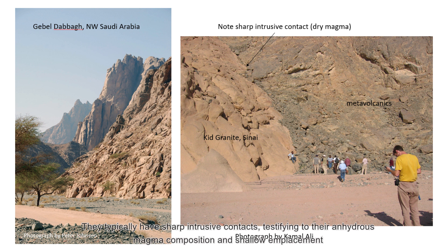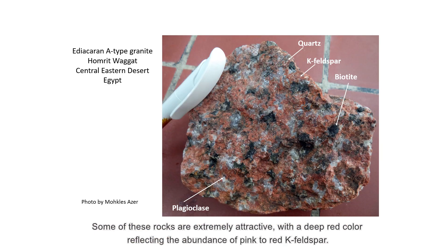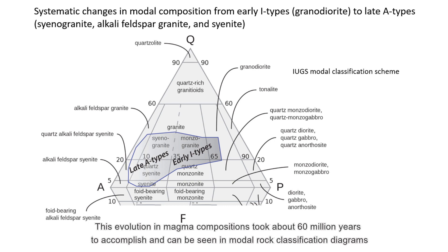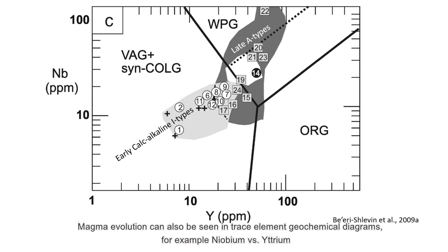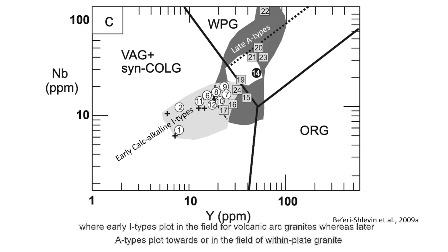They typically have sharp, intrusive contacts, testifying to their anhydrous composition and shallow emplacement. Some of these rocks are extremely attractive, with deep red color reflecting the abundance of pink to red K-feldspar. This evolution in magma compositions took about 60 million years to accomplish, and it can be seen in modal rock classification diagrams, as well as in trace element geochemical diagrams — for example, niobium versus yttrium — where early I-types plot in the field for volcanic arc granites, whereas later A-types plot towards or in the field of within-plate granite.